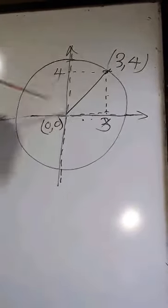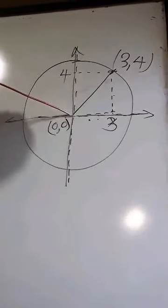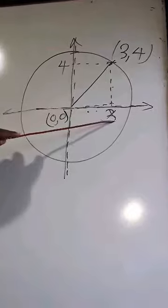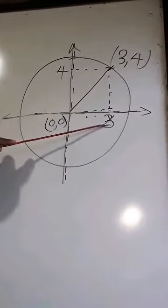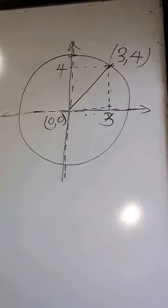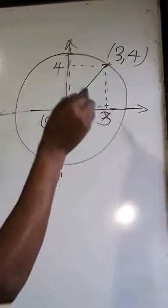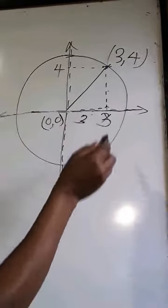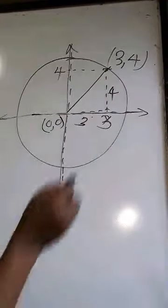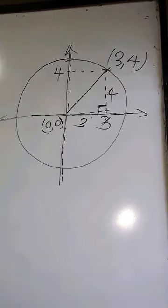This is a circle passing through point (3, 4) whose center is (0, 0). Point (3, 4) means on the x-axis the x-ordinate is 3 and on the y-axis the y-ordinate is 4. So the x-displacement is 3 minus 0 which is 3, and the y-displacement is 4 minus 0 which is 4.